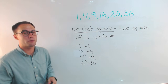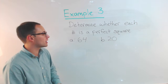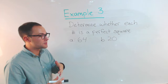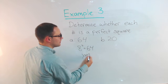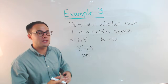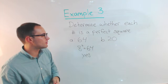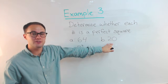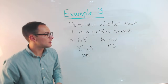Let's determine whether each number is a perfect square. First, 64 — is there a whole number that when squared equals 64? Hopefully you have your squares memorized and know that eight squared is 64, so 64 is a perfect square. Now, how about 20? Is there a number we can square to get 20? Remember, you have to multiply the same number by itself — two times ten doesn't count. Four squared is 16, five squared is 25, so there is no whole number we multiply by itself to get 20. Therefore, 20 is not a perfect square.